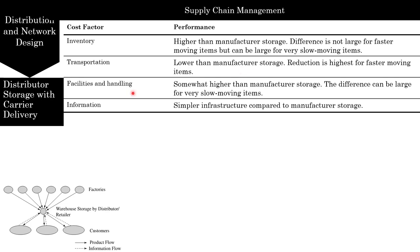Facility and warehousing costs are somewhat higher than manufacturer storage due to loss of aggregation, while processing and handling costs are comparable to manufacturer storage unless the factory can ship directly from the production line. From a facility cost perspective, distributor storage is not appropriate for extremely slow-moving, high-value items. The information infrastructure needed for distributor storage is significantly less complex than for manufacturer storage — real-time visibility between customers and warehouses is needed, whereas real-time visibility between customer and manufacturer is not required. Visibility between distributor warehouse and manufacturer can be achieved at much lower cost.